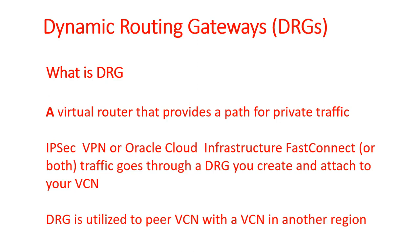DRG is also utilized to peer a VCN with a VCN in another region. You are using DRG to connect to a VCN which is in the cloud network, and you do that when you connect from your data center.